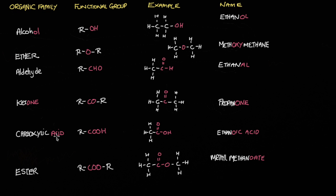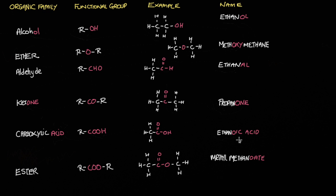Carboxylic acids have the functional group COOH, represented here — a COOH attached to an R group. And if it ends with OIC, as in this case, ethanoic acid, you're dealing with a carboxylic acid.